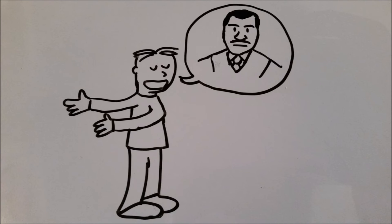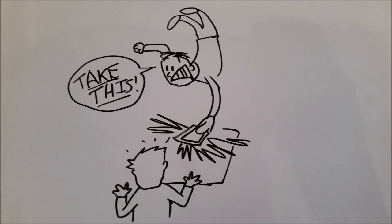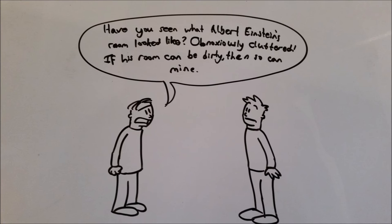Sometimes it's good to use the word of respected people in arguments, especially formal ones, but if you're just dropping names, you're appealing to authority. For example, if Bernard says, have you ever seen what Albert Einstein's room looked like? Obnoxiously cluttered. If his room can be dirty, then so can mine. He's merely using the name of someone famous to prove his point, not something they said.